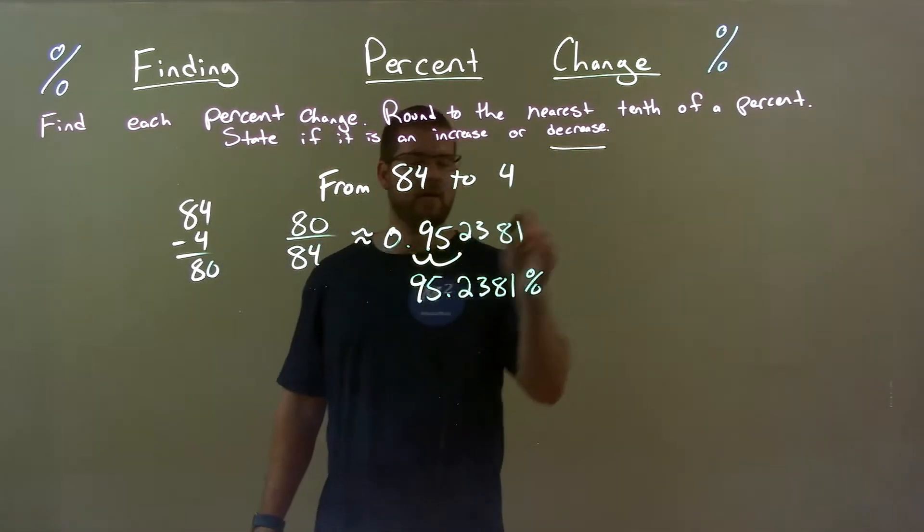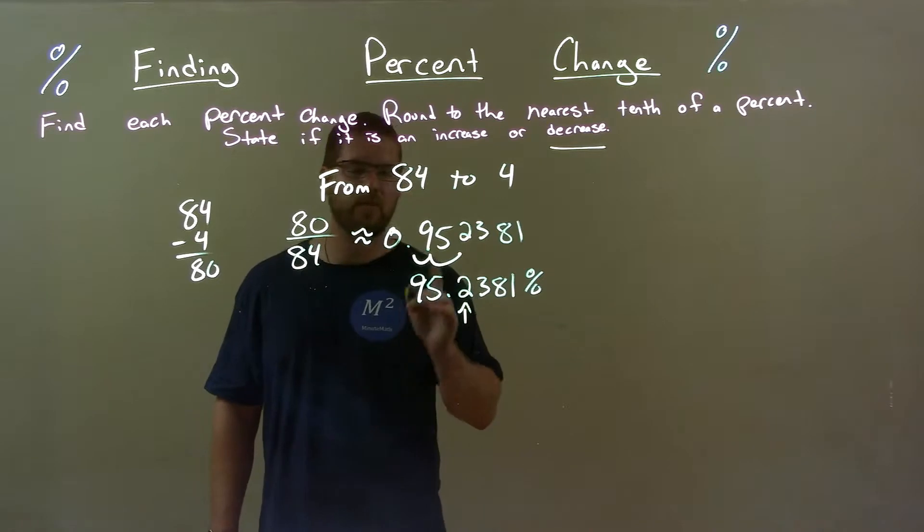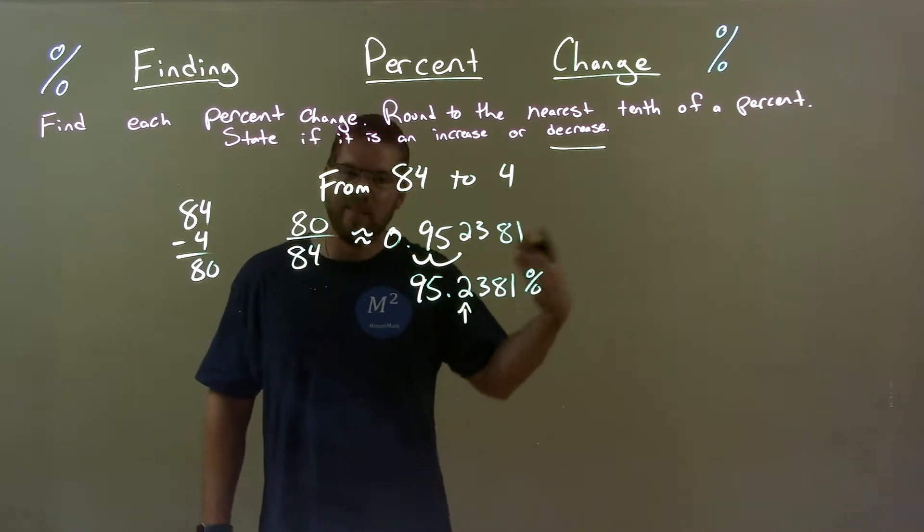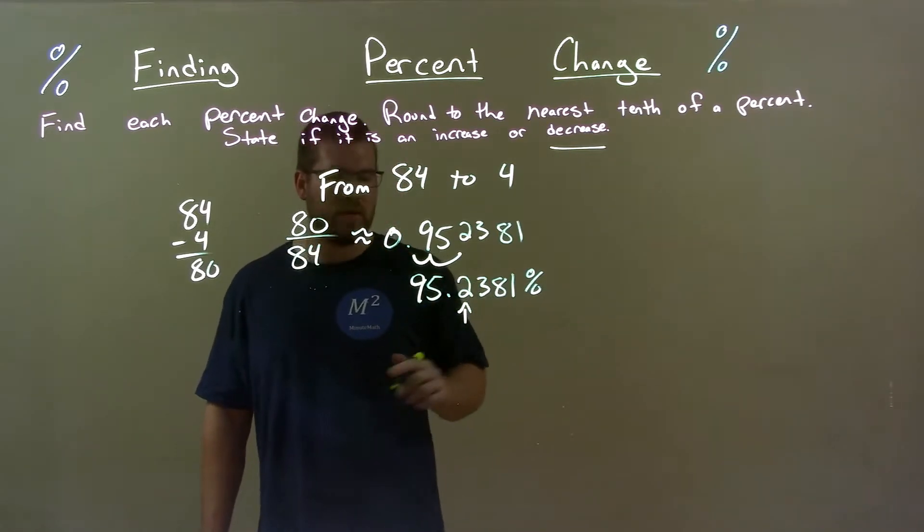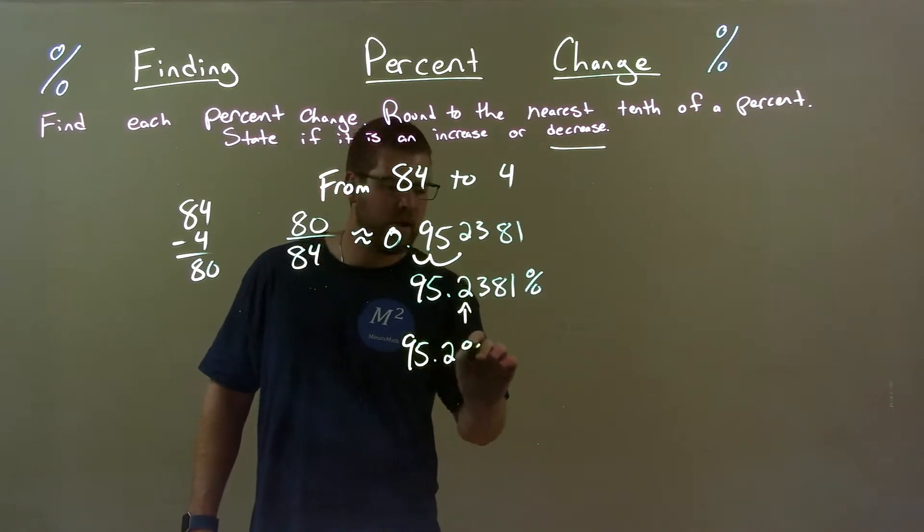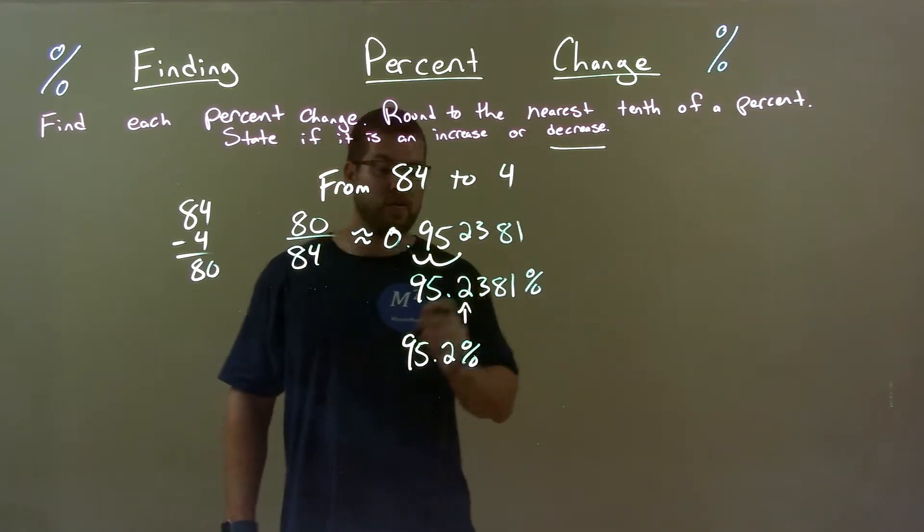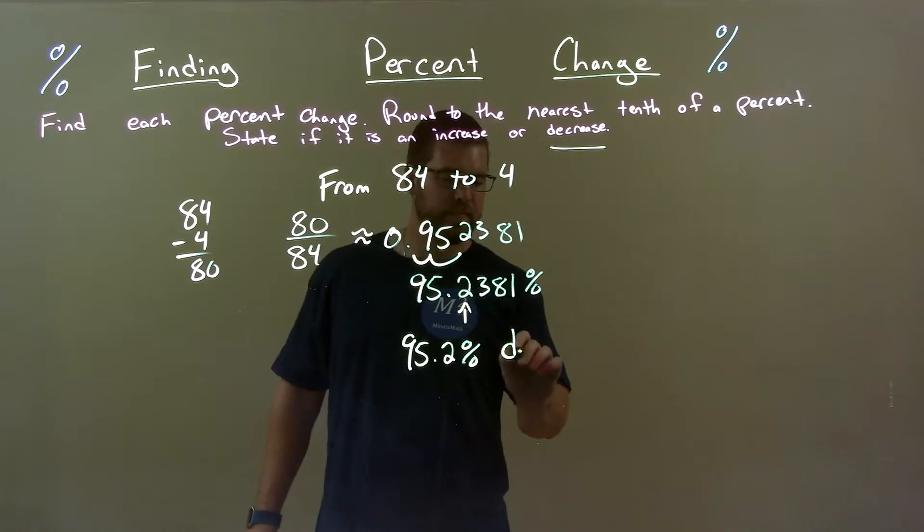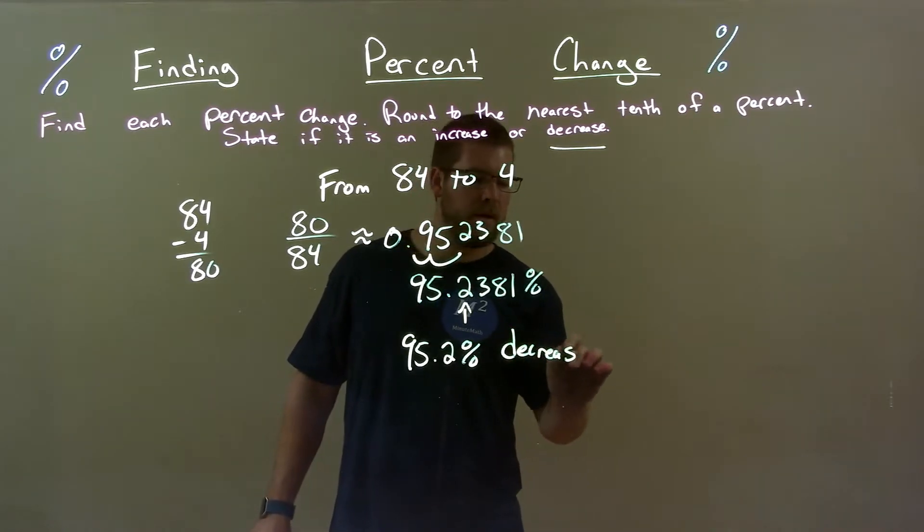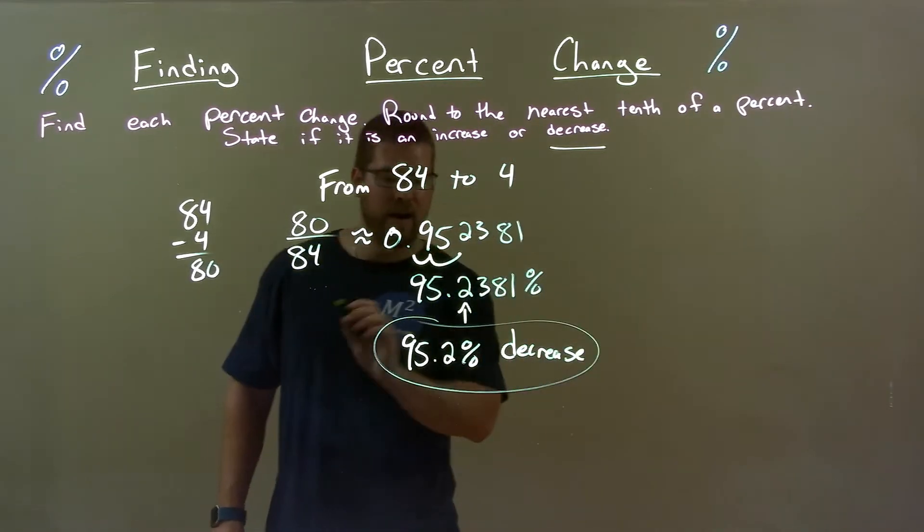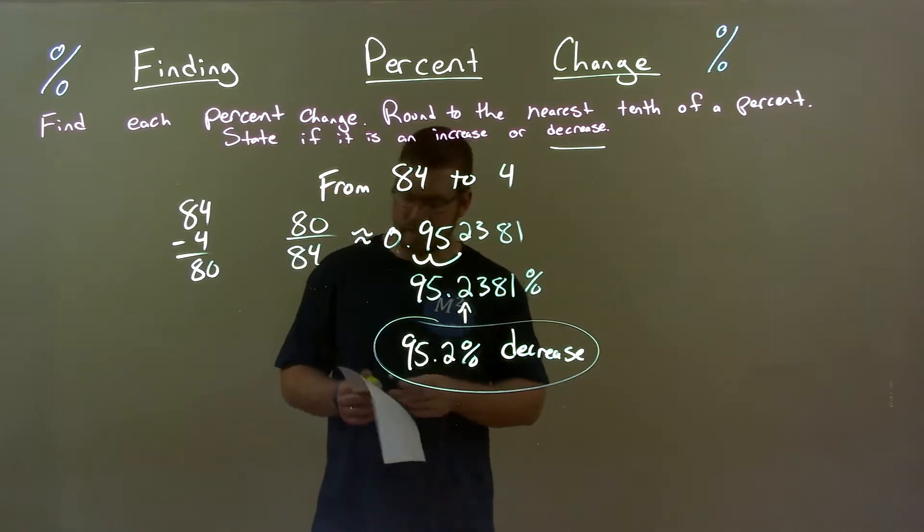Round that to the nearest tenth. We look at the tenths place, the 2, look to the right, see the 3. Three tells us that two stays where it is. 95.2%, we already stated that this was a decrease. And there we have our answer, 95.2% decrease.